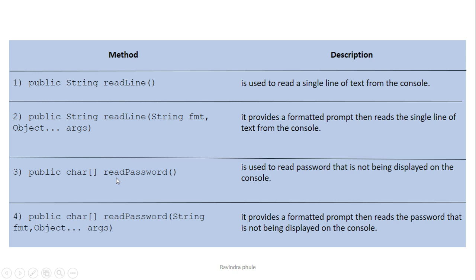Similarly, we have the readPassword() method, whose return type is a character array. That is a public method. This readPassword() method allows us to read a password that is not displayed on the console — you are not able to see how many characters you entered, and you don't even get an idea of what you typed. But if you type the correct password, it is going to be validated. There is also a version of readPassword() that takes two parameters: a String and an Object. I have used the second and fourth methods in my example.